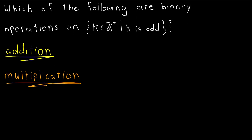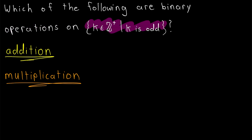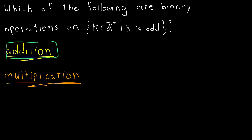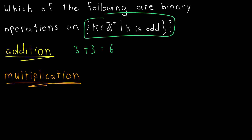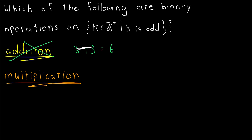Let's look at another collection: which of the following are binary operations on the set of odd positive integers — that is, the set containing all positive integers k where k is odd? Is addition a binary operation on this set? The answer is no, because addition is not closed on the set of odd positive integers. For example, 3 and 3 are odd positive integers, but their sum is 6 — an even positive integer not in the set. In fact, you can easily prove that the sum of any two odd integers is an even integer.